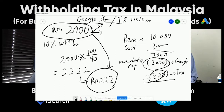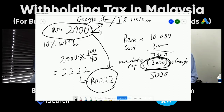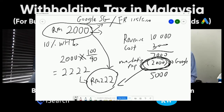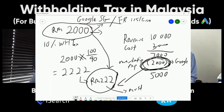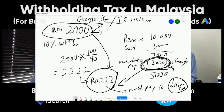What if a business spends the 2,000 but doesn't pay the withholding tax of 222 — can they still claim the 2,000 as a tax deduction? If the 222 withholding tax is not paid, then the 2,000 is also not tax-allowable. So it's actually good for businesses to pay the withholding tax. You have to pay the 222 to allow the 2,000 as a tax deductible. If you didn't pay it and Inland Revenue does an audit, they will add back this 2,000 until the time you actually pay the 222 — only then will they allow you to claim it. But by then, your tax impact will already be there.